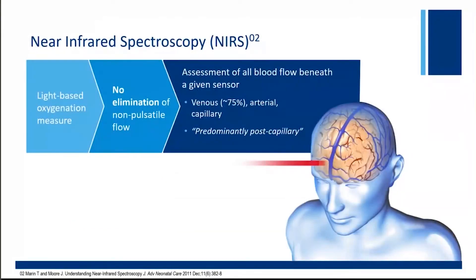What is near-infrared spectroscopy? NIRS has an appearance very similar to pulse oximetry — it's a light-based oxygenation measure — but unlike pulse oximetry, there's no elimination of non-pulsatile flow. So you're looking at oxygenation of all blood flowing beneath the sensor. That typically equates, in any block of tissue in the body, to a majority of blood that is venous — approximately 70 to 80 percent, using 75 percent as our estimate — with the remainder being arterial and capillary. So when we look at NIRS, we're looking at a predominantly post-capillary signal: what is the venous and capillary oxygenation of the blood flowing beneath the sensor?